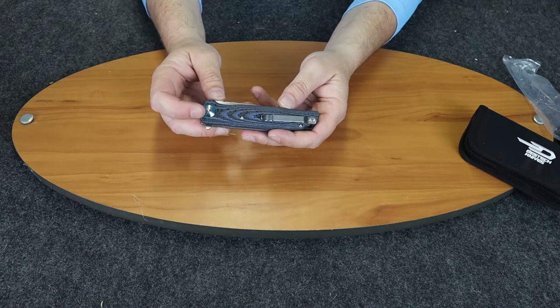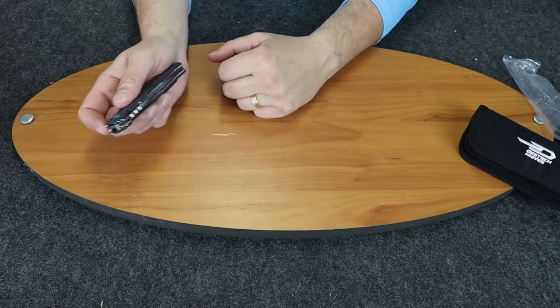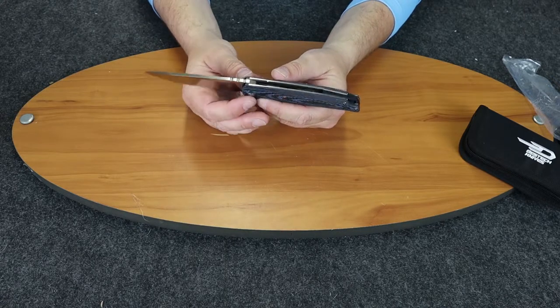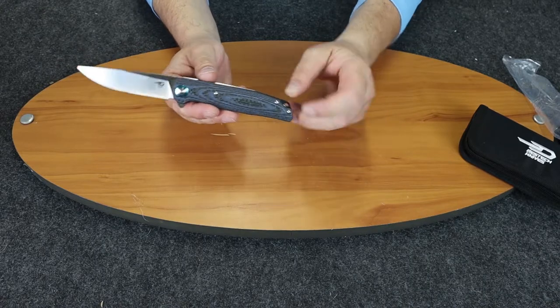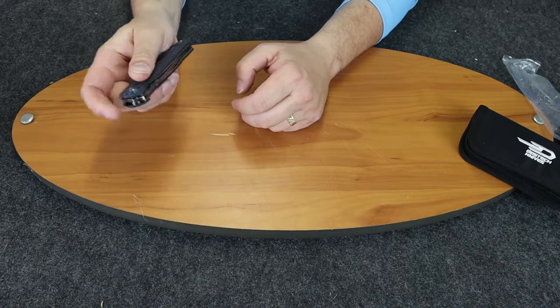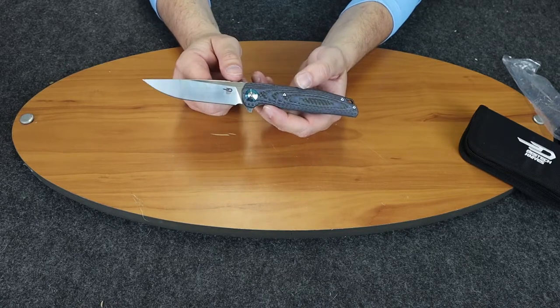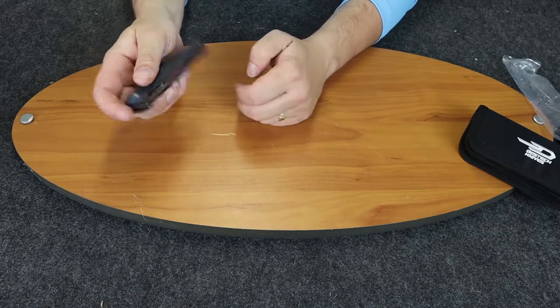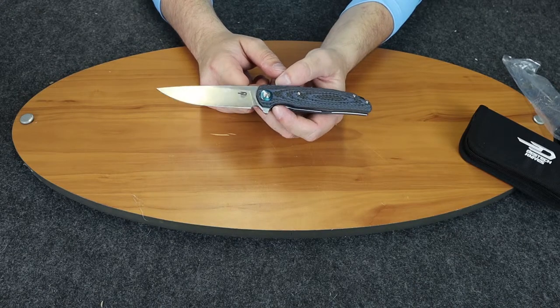It has a titanium pivot collar, a stainless steel pocket clip, and a back spacer with room for a lanyard. It is a flipper, it is manual so no assist. It has ceramic ball bearings for its pivot system.